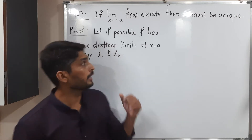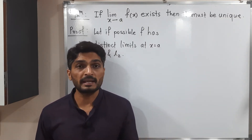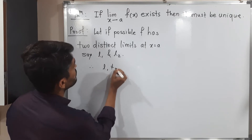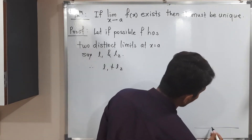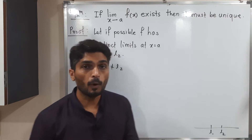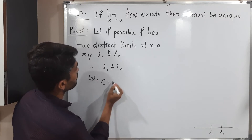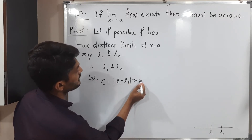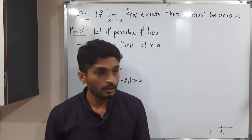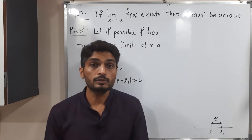So here I have already assumed: let it be possible that the function has two distinct limits, calling them L1 and L2. These are distinct, meaning different, so L1 is not equal to L2. If you draw them, there will be some distance between them, so mod(L1 - L2) is greater than zero. Therefore, let epsilon equal mod(L1 - L2) — whatever the distance between them, that is my epsilon.